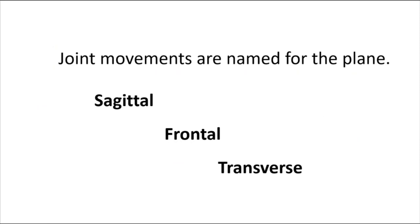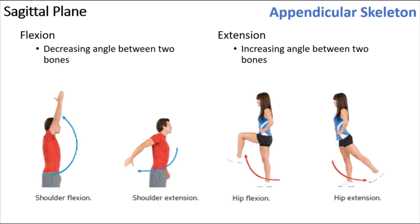When that limb moves forward and back through the coronal axis — the sagittal plane — when the bones are getting closer together, that is called flexion. When the bones or segments are getting further from each other, that's called extension. You'll find textbooks use the term hyperextension, but it's really an inappropriate term. Hyperextension is typically due to injury — when you go beyond the normal physiological range and tear tissue. I would not get in the habit of using that term.